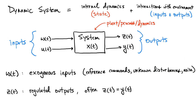What makes this difficult is that in addition to things we can measure — Y of T — and things we can control — U of T — we have inputs some of which we may not be able to control. These exogenous inputs are anything else impinging upon the system. These could be noise related to the system, an unknown disturbance affecting the system, or something we do know such as reference commands. We'll talk about all of these examples later.